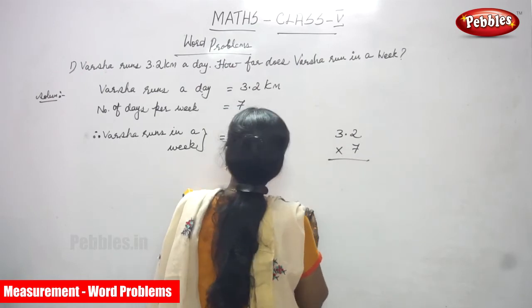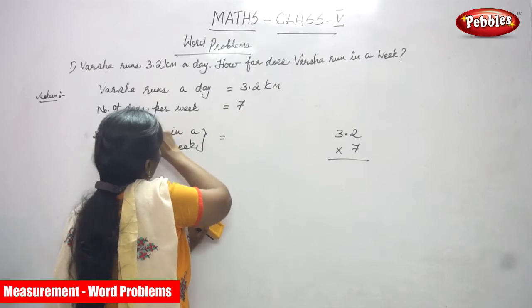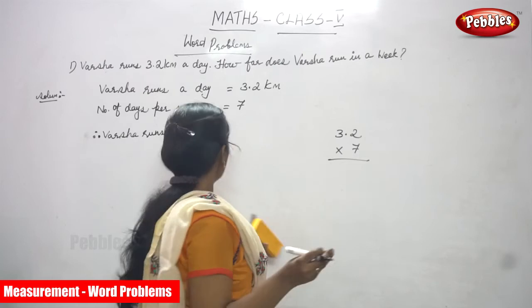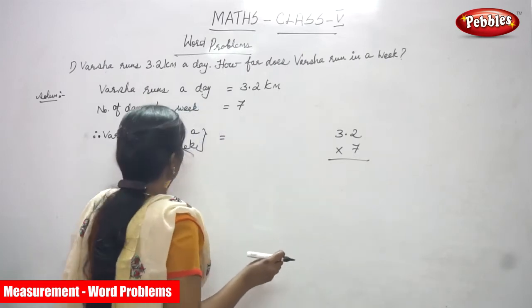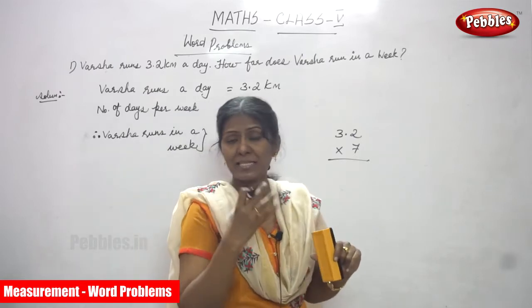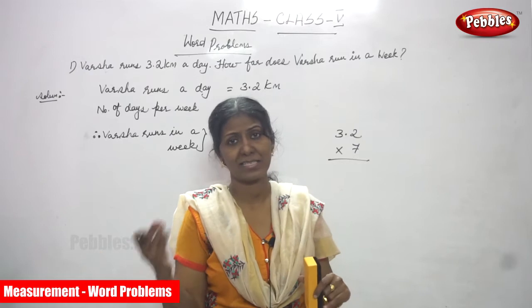I told you Varsha runs every day 3.2 km. Number of days per week - that is 7 days per week. They asked how many in 7 days. That means in a week how many km she runs? That is the question.